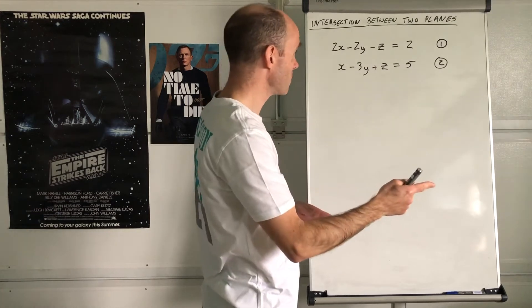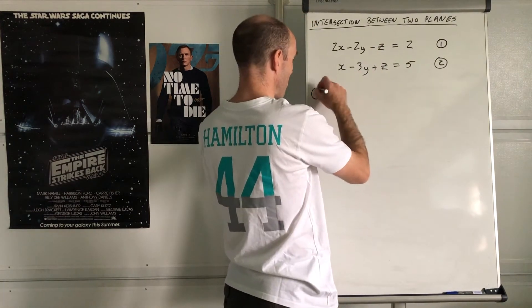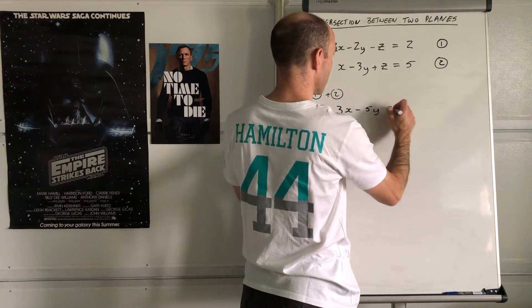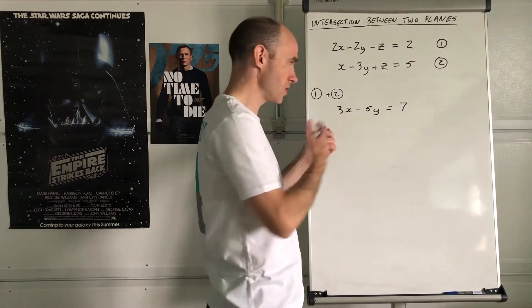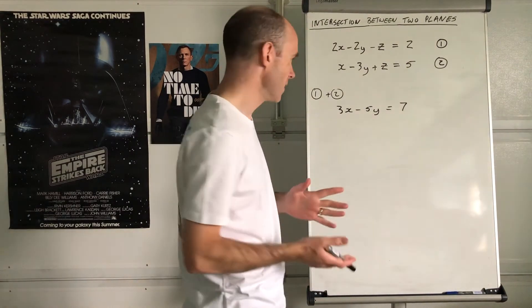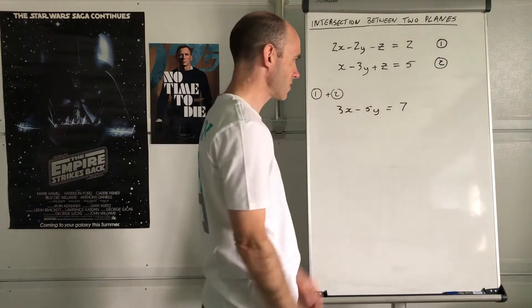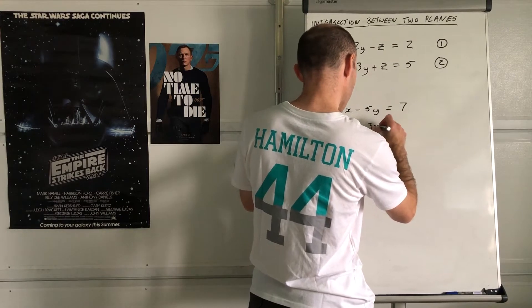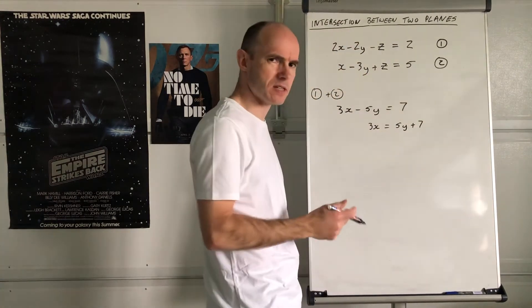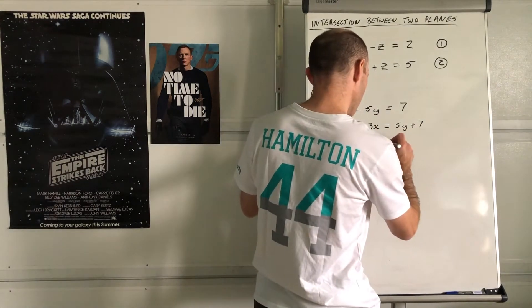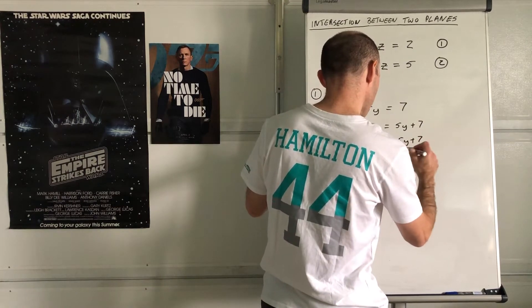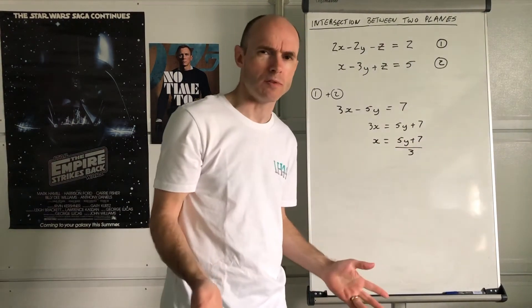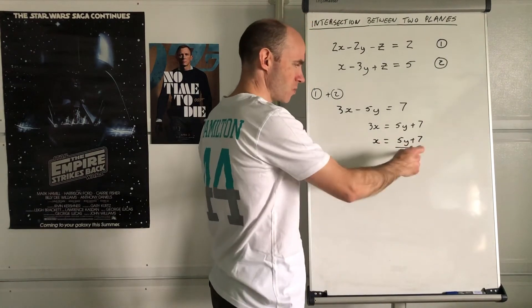So you're not going to find specific values of x, y, and z. What I'm going to do is eliminate one variable as quickly as possible. If we add the two equations together, z cancels, giving 3x - 5y = 7. Rearranging: 3x = 5y + 7, so x = (5y + 7)/3. This gives us a linear relationship between x and y.